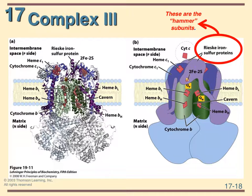In general, more protons will be going across from the N side to the P side at complex three. We're going to talk about the Q cycle on Monday.